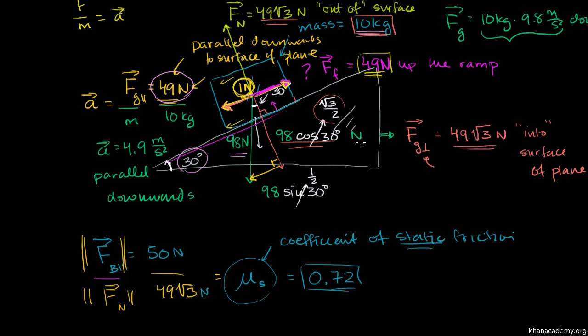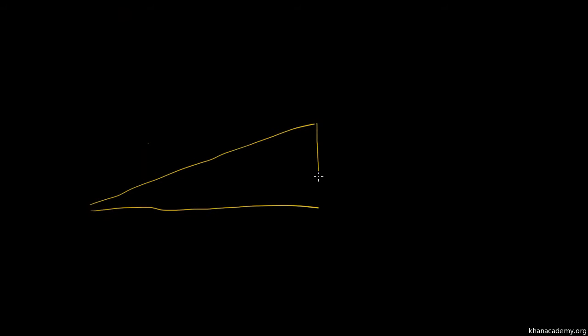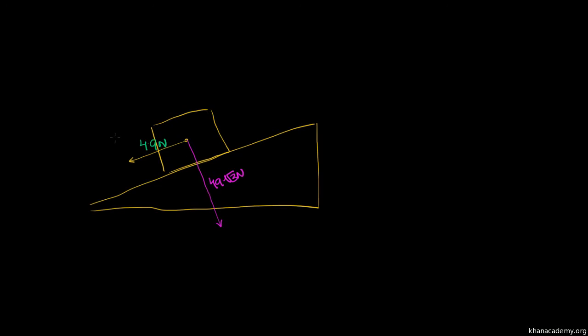Now, with that out of the way, let's take a different scenario. Let me just redraw that same block. So we have the same block — this is the wedge, and this is the block right over here. We know that the component of gravity parallel to the plane is 49 newtons. We know the component of gravity perpendicular to the plane, which we figured out two videos ago, is 49 square roots of 3 newtons. The block is not accelerating in the normal direction, so there must be a counteracting force — the normal force of the wedge on the block — at 49 square roots of 3 newtons.